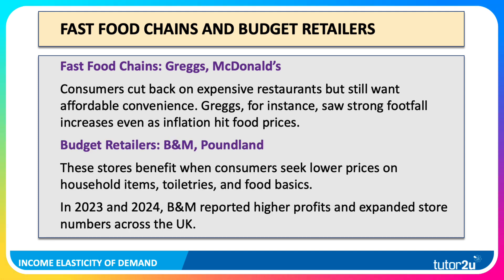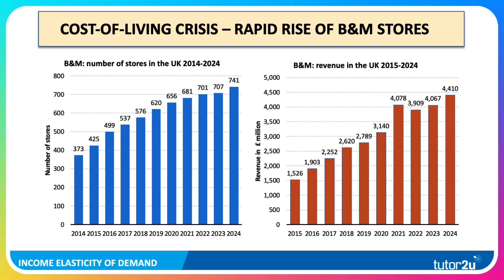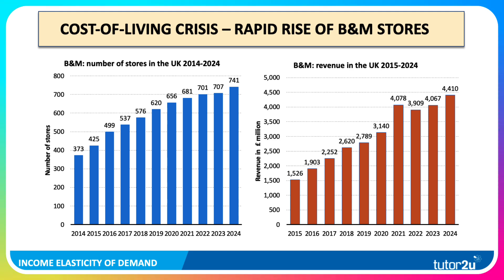Budget retailers like Poundland and B&M tend to benefit when people seek low prices on basic items — toiletries, washing powder, and food basics. In the last two years B&M has reported much higher profits and expanded store numbers across the UK. This is a really interesting business to quote in an exam. The number of B&M stores has risen from 373 just over a decade ago to 741 — more than doubling in size. Their revenues have grown very strongly from £1.5 billion in 2015 to just under £4.5 billion in 2024. These two charts show the scale and the steep, rapid growth of B&M as a discount retailer.